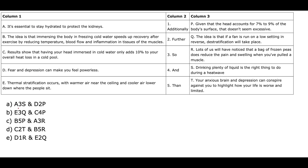Now the next question follows the same pattern. The first option is A3S. Connector 3 says 'so', which denotes a conclusion. Sentence A: 'It is essential to stay hydrated to protect the kidneys.' Sentence S: 'Drinking plenty of liquid is the right thing to do during a heat wave.' Is this a conclusion? What does a heat wave have to do with kidneys? These two are not related, so A3S is incorrect.